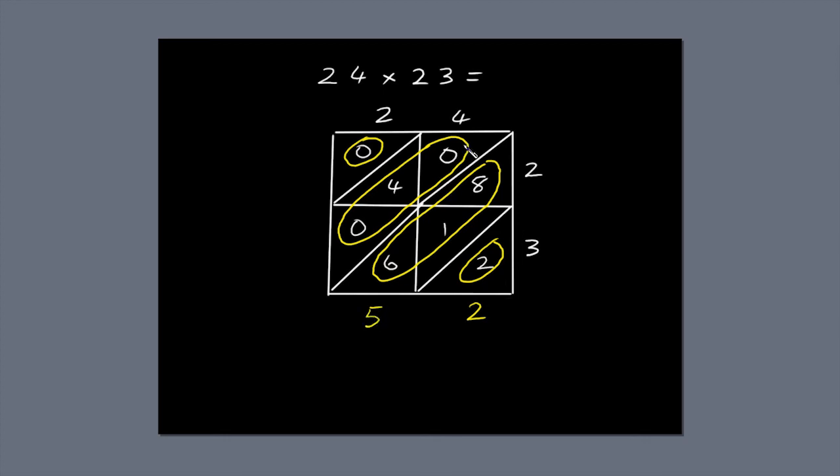Don't forget to carry the 1 across to the next diagonal. 1 plus 4 is 5. 0.